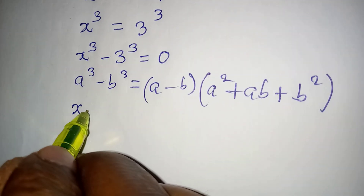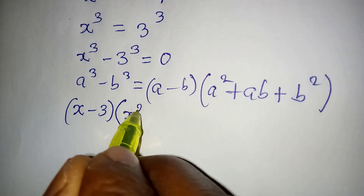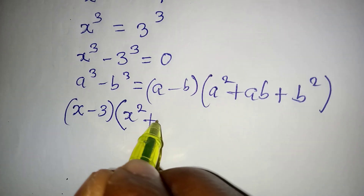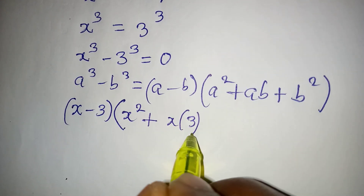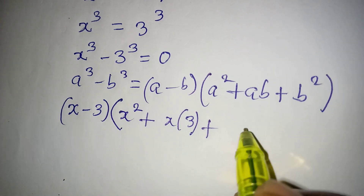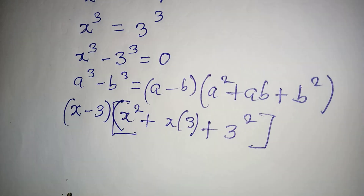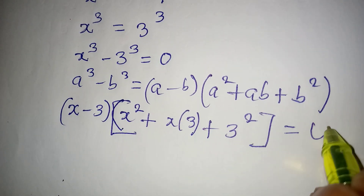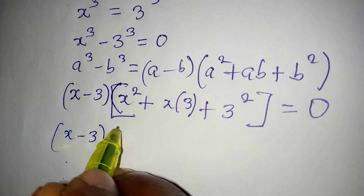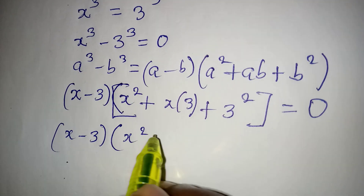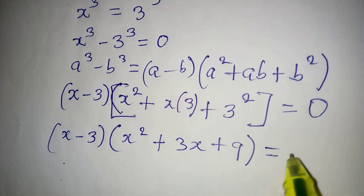So we have (x minus 3), then in the second bracket we have x squared plus ab, which will be x times 3, plus b squared, which will be 3 squared. Close the bracket and this is equal to 0. Simplifying: x minus 3, then x squared plus 3x plus 9, and this is equal to 0.